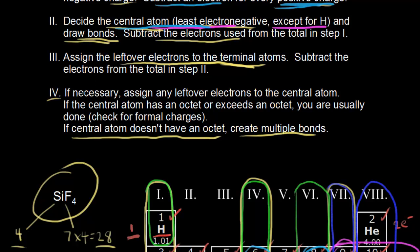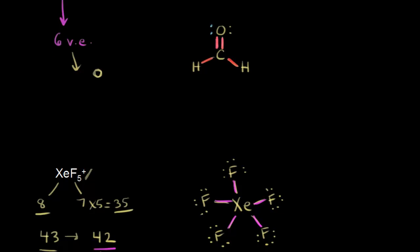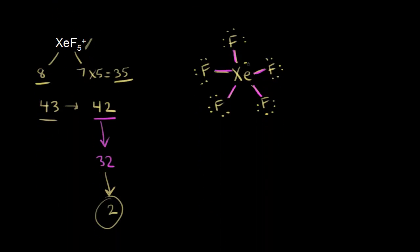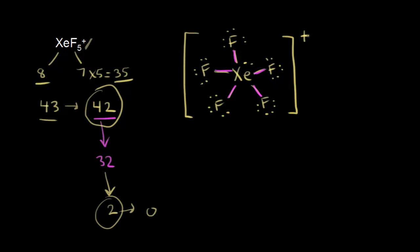Looking at step four: if necessary, assign any leftover electrons back to the central atom. When the central atom has an octet or exceeds an octet, you are usually done. So we take those two remaining electrons and assign them to xenon as a lone pair. Now we've represented all 42 valence electrons. Most people will represent this dot structure with brackets and a positive charge outside — there's your xenon pentafluoride cation. We'll do many more examples in upcoming videos, and we'll see how drawing dot structures allows you to predict the shapes of molecules.